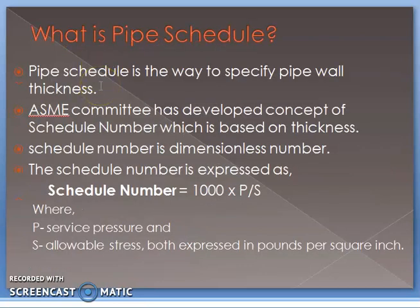Pipe schedule is another dimensionless number used to specify the pipe wall thickness. The American Society for Mechanical Engineers developed the concept of the schedule number, which is based on wall thickness. The schedule number is expressed as 1000 × (P / S), where P is the service pressure and S is the allowable stress. Both P and S are expressed in pounds per square inch (psi).